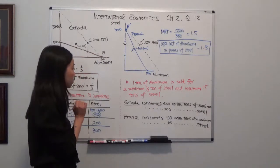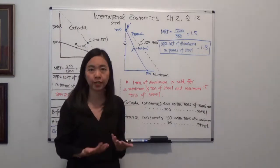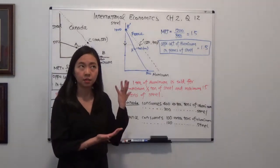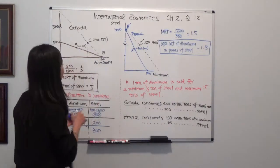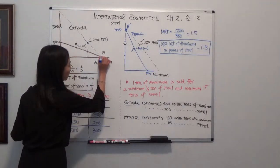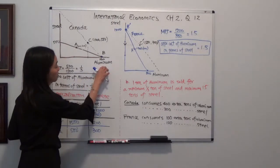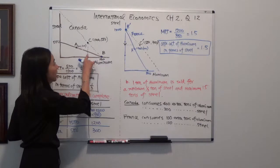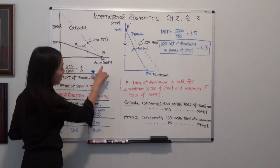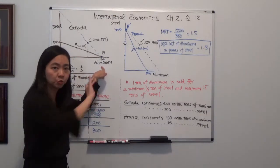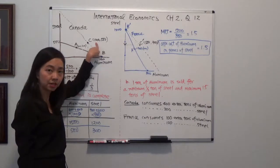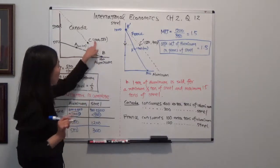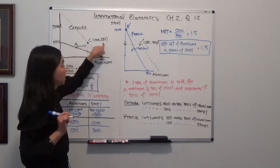Finally, we assess whether Canada and France both benefit from trade. The question tells us they will trade 500 tons of aluminum for 500 tons of steel. Canada exports 500 tons of aluminum to France, leaving 1000 tons of aluminum, and imports 500 tons of steel. So Canada ends up consuming 1000 tons of aluminum and 500 tons of steel, which we mark as point C.